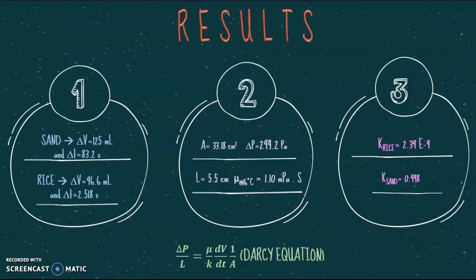Results. In the first circle, we have the delta of volume and the delta time for each solid and then the cross sectional area, the pressure drop, the length of the barrel, and the viscosity of the water were determined and measured.